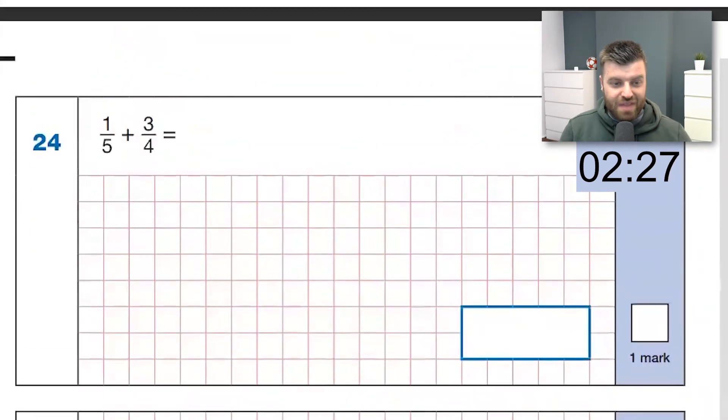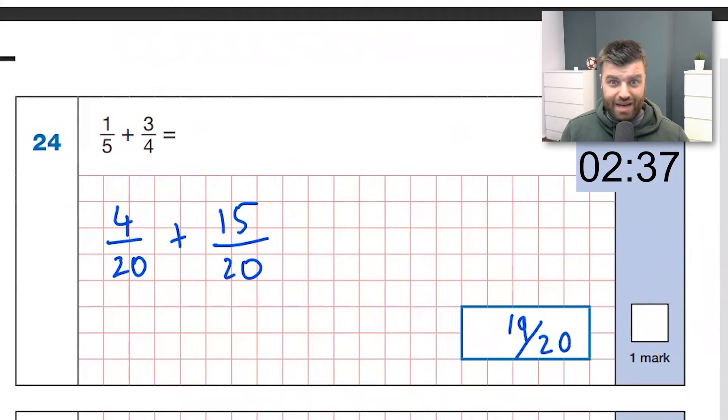Next question. 24. One fifth. Let's change them into 20th. So, four 20ths plus 15, 20ths. Yes, it's 19, 20ths. Guys, I've got no idea how I'm doing for time. I'm hoping I'm doing quite well.